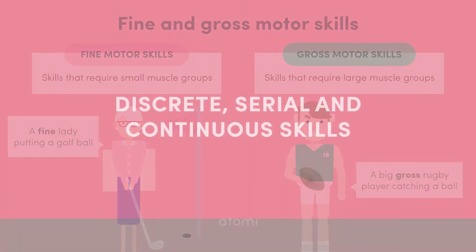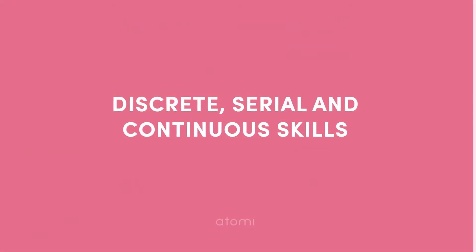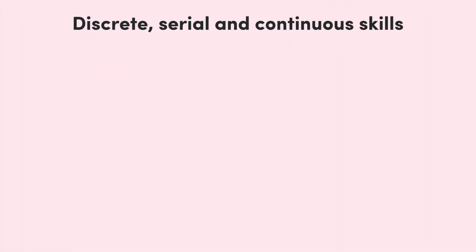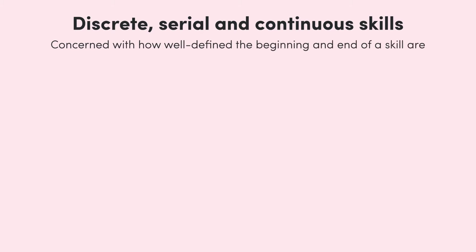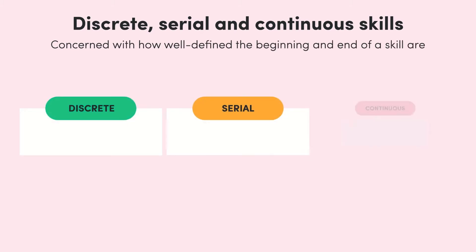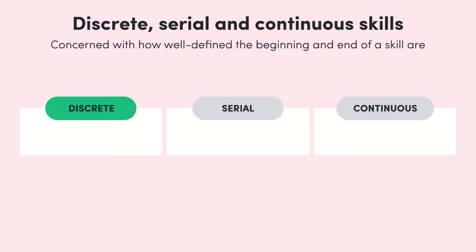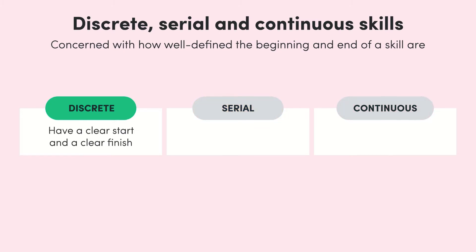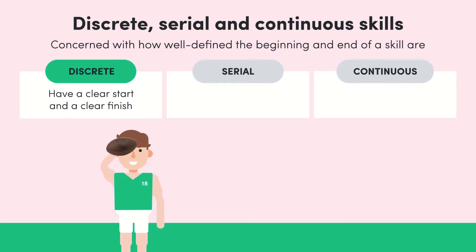Next, we're going to break down motor skills into discrete, serial, or continuous. These classifications are concerned with how well-defined the beginning and end of the skill are. Discrete skills are super simple — they have a clear start and finish. Like throwing a ball: you hold it up, throw it, the throw is over, and the skill is complete. It's one skill with a distinct start and a distinct end.